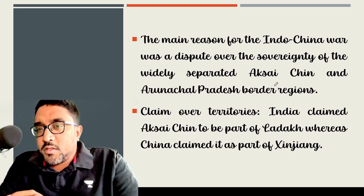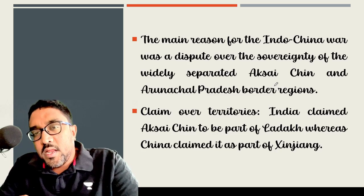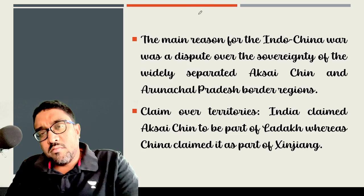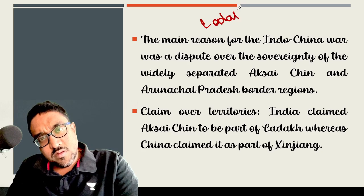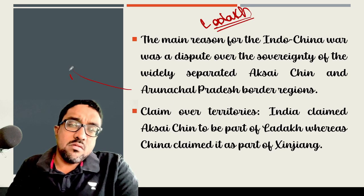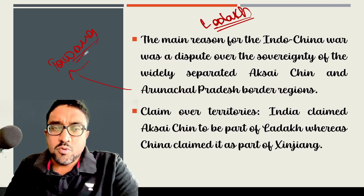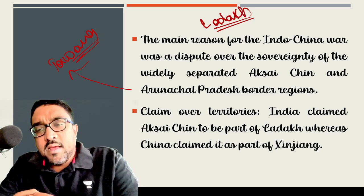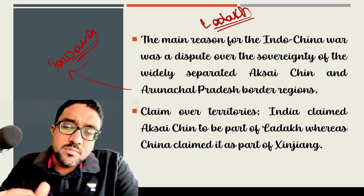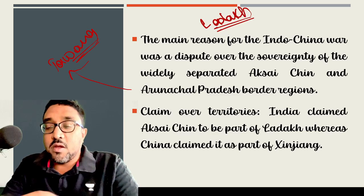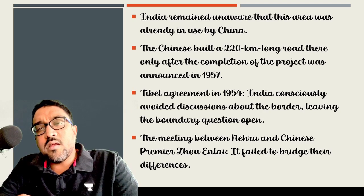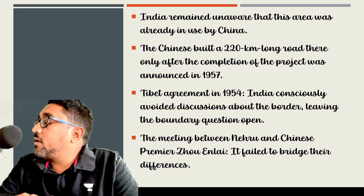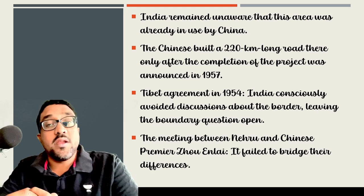The main reason for the Indochina War has always been the dispute over the sovereignty of the widely separated Aksai Chin region near Ladakh, and the Tawang region near Arunachal province. These two places remain a major issue of contention between India and China. India claims Aksai Chin to be part of Ladakh, whereas China claims Aksai Chin to be part of its Xinjiang province. India remained unaware that China had been using Aksai Chin; India was not aware of it.